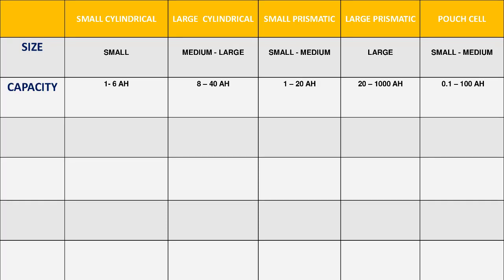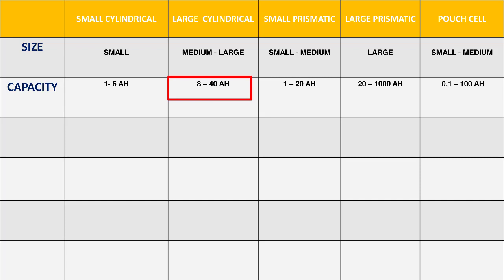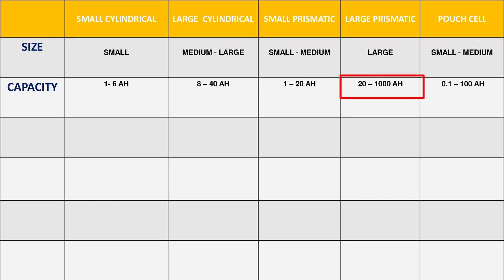Let's see the capacity. For the small cylindrical cell, that is 1 to 6 ampere-hour. For the large cylindrical cell, that range is 8 to 40 ampere-hour. For small prismatic cells, that range is 1 to 20 ampere-hour. For the large prismatic cell, that is 20 to 1000 ampere-hour. For the pouch cell, that is around 0 to 100 ampere-hour.